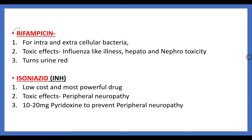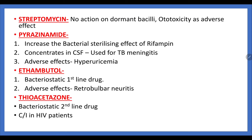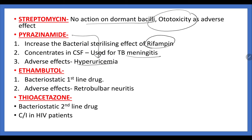Important drug properties: Rifampicin gives red-colored urine and causes influenza-like illness and hepatonephrotoxicity. Isoniazid is low cost but a very important and powerful drug; it causes peripheral neuropathy, for which 10–20 mg of pyridoxine is given. Streptomycin has no action on dormant bacilli and causes ototoxicity. Pyrazinamide has a bactericidal sterilizing effect that enhances rifampicin; it concentrates in CSF and is used for TB meningitis. Its adverse effect is hyperuricemia with gouty arthritis. Ethambutol causes retrobulbar neuritis and is a bacteriostatic drug among the first-line agents.